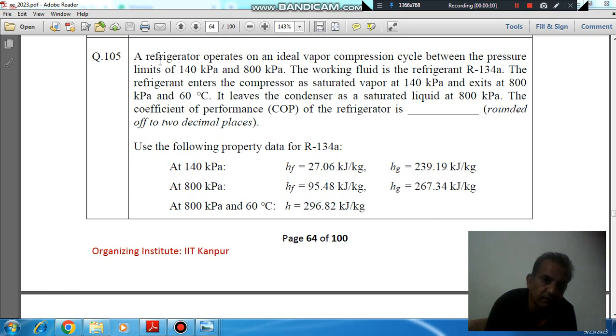Problem 1.05: A refrigerator operates on an ideal vapor compression cycle between the pressure limits of 140 kPa and 800 kPa. The working fluid is refrigerant R-134a. The refrigerant enters the compressor as saturated vapor at 140 kPa and exits at 800 kPa and 60 degrees Celsius. It leaves the condenser as saturated liquid at 800 kPa.